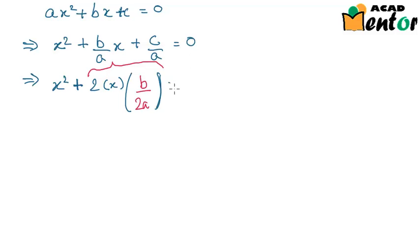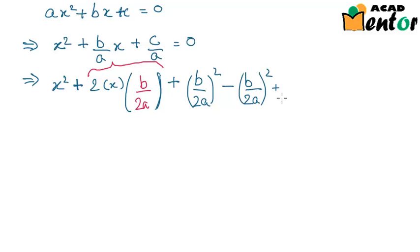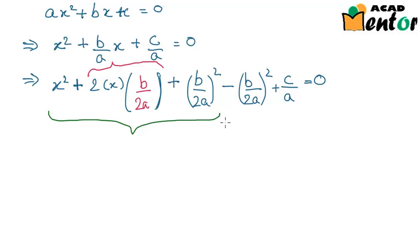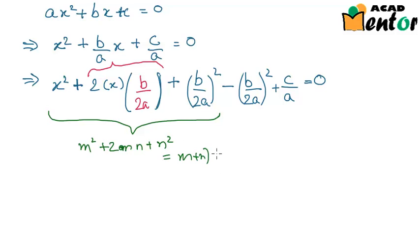Then I will add (B/2A)² and subtract the same term to maintain balance, and copy the constant term C/A, giving us the equation. The first three terms resemble the identity M² + 2MN + N², which equals (M + N)².